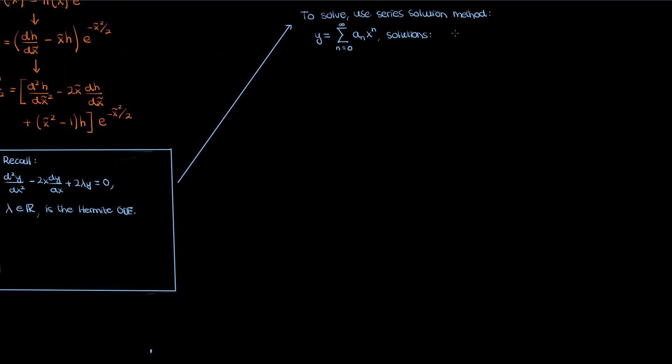When you do that you get two categories of solutions to the Hermite differential equation. The first category of solutions corresponds to the even indices of the series where n is 0, 2, 4, etc. The second category corresponds to the odd indices 1, 3, 5, and so on.